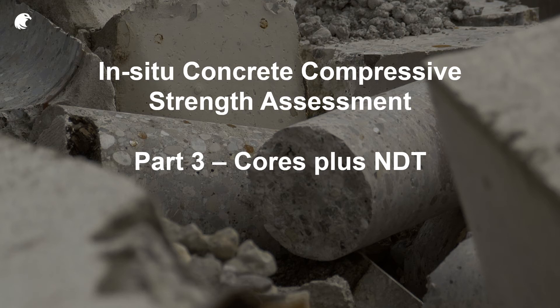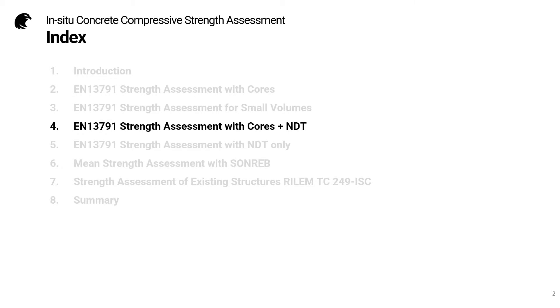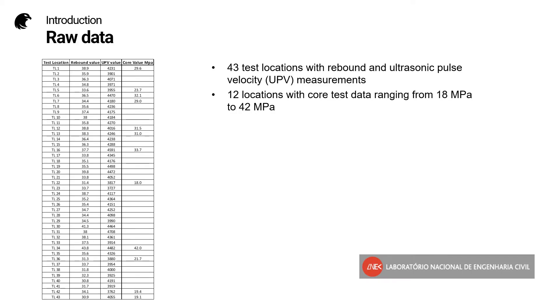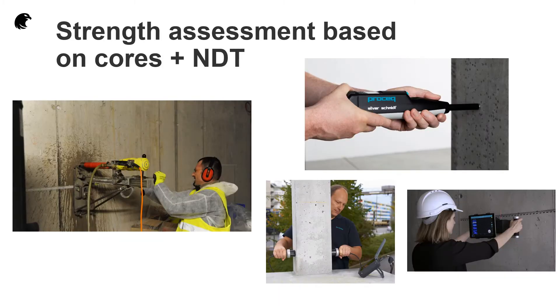Welcome to part 3 of this series on in-situ concrete compressive strength assessment — cores plus NDT. This time we'll be looking at the methods described in EN 13791 for combining core test results with NDT measurements. The examples shown will make use of raw data provided by LNEC in Lisbon, Portugal, consisting of core data, rebound hammer, and UPV measurements. Let's get started on strength assessment based on a combination of cores plus NDT.